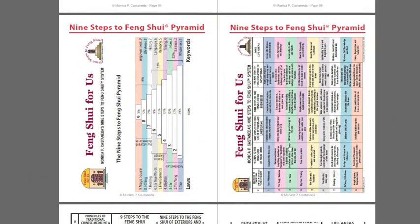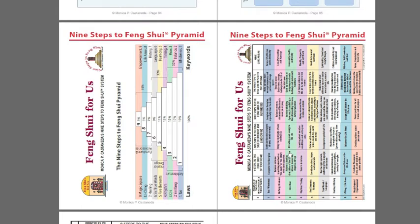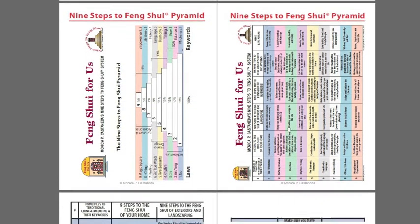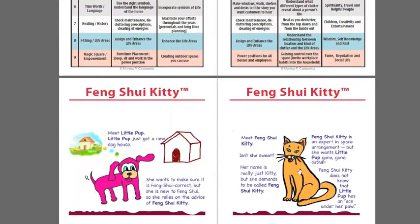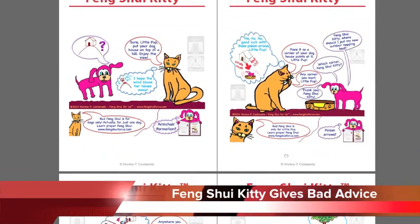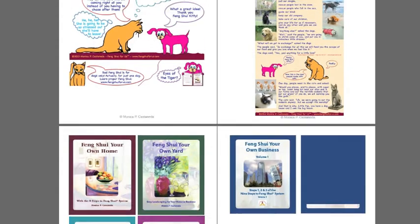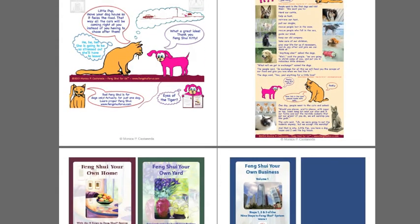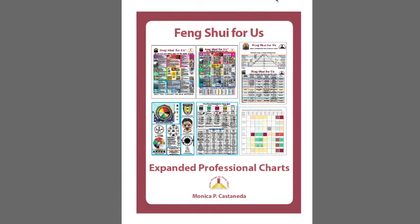The 9 Steps to Feng Shui pyramid shows how the Nine Steps to Feng Shui is used for homes, businesses, landscaping, and other things, along with an expansion of that chart. There are also Feng Shui kitty cartoons, which are pretty funny because Feng Shui kitty is trying to get rid of the dog she lives with. This is just to give you an idea of the contents of the book Feng Shui for us — Expanded Professional Charts — so you can see the value included. This is the result of my research, study, and effort of 20 years. All these charts have been created by me, and you can really learn a lot from them.